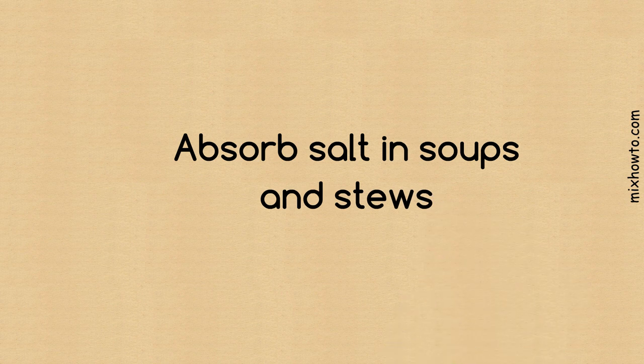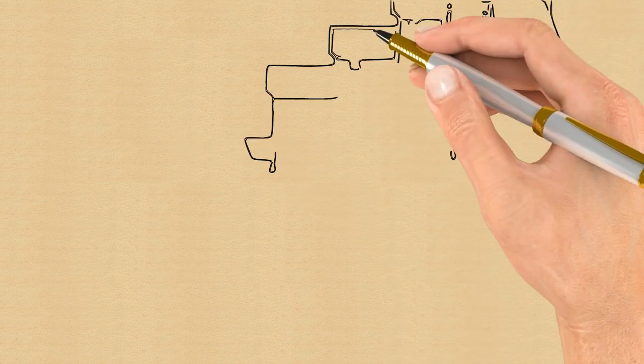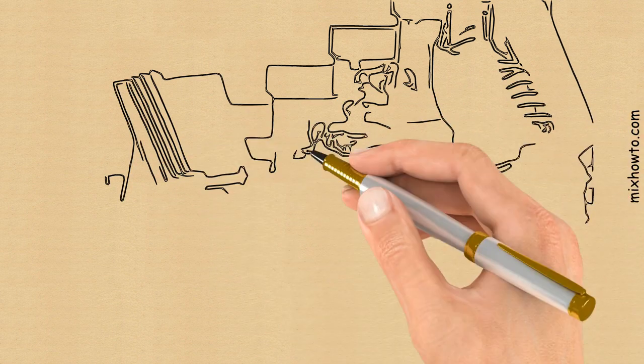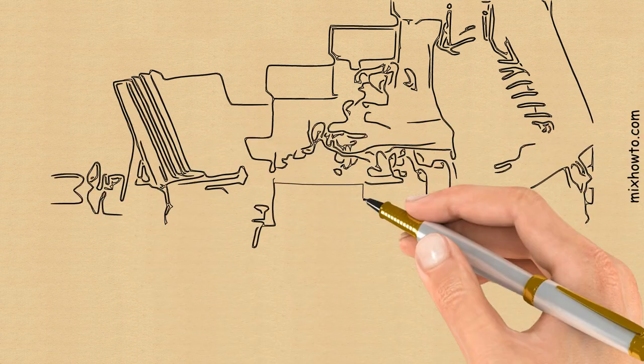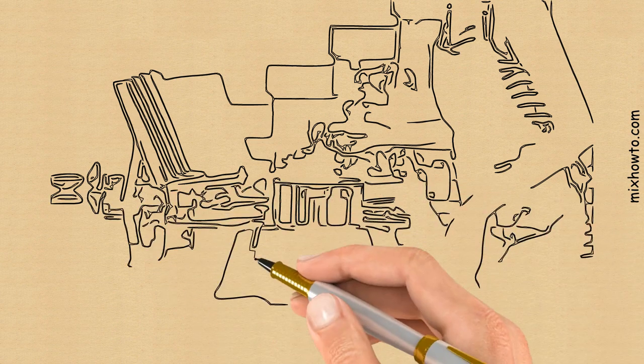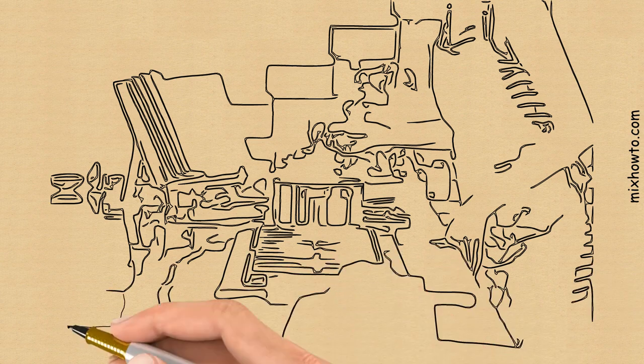Absorb salt in soups and stews. Salting to taste is one thing, but it's possible to overdo it. When you find yourself getting heavy-handed with a salt shaker, simply drop a few apple or potato wedges in your pot.